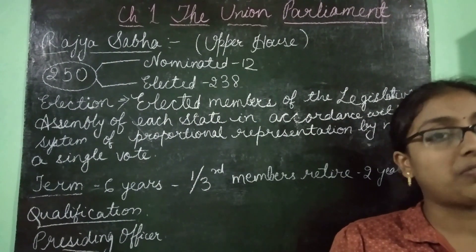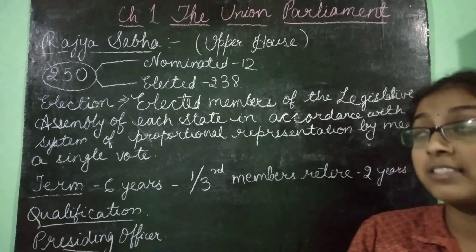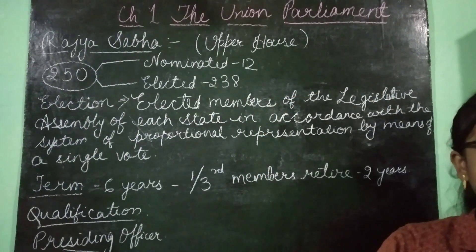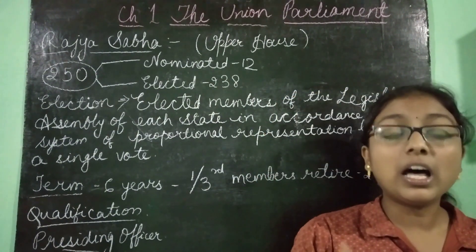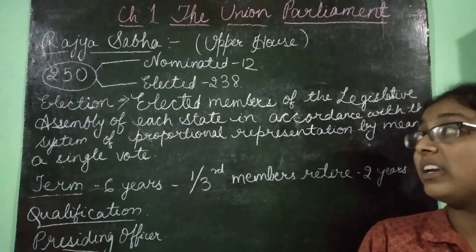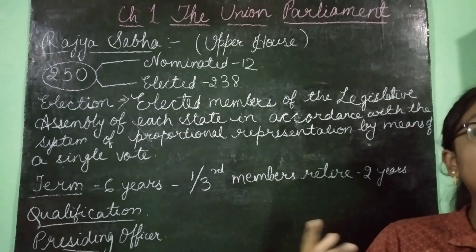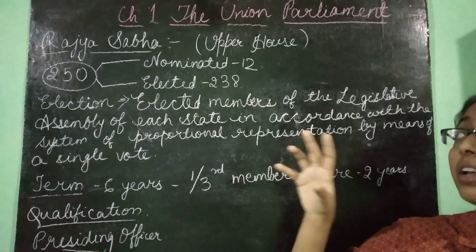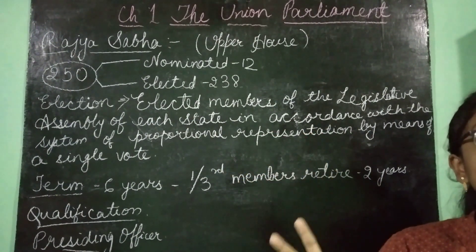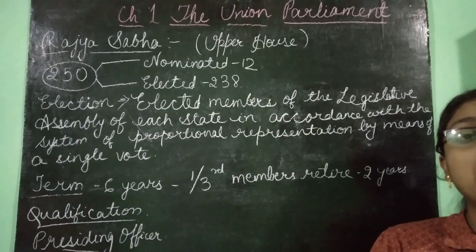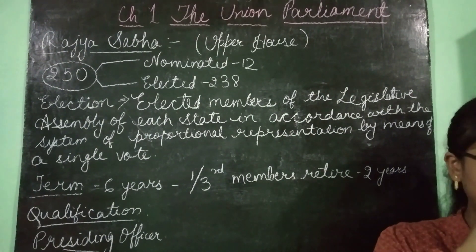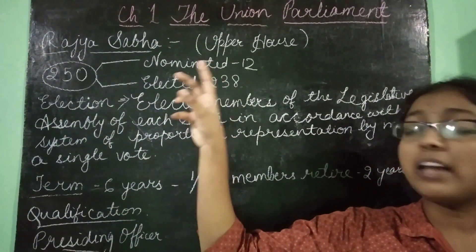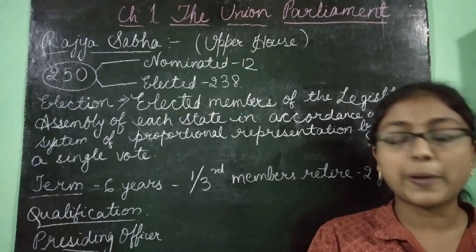Rajya Sabha is called the upper house of the parliament. It's also called the Council of States, because Rajya Sabha represents a federation of states — that is, representatives from various states are present in the Rajya Sabha as members.